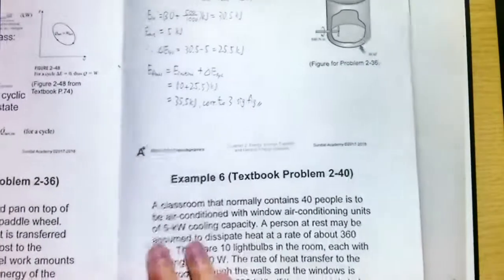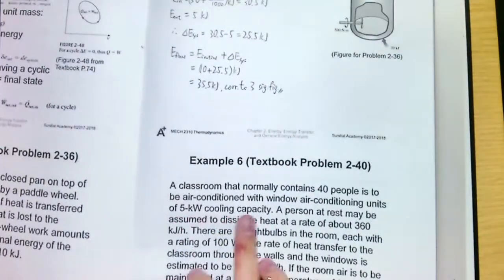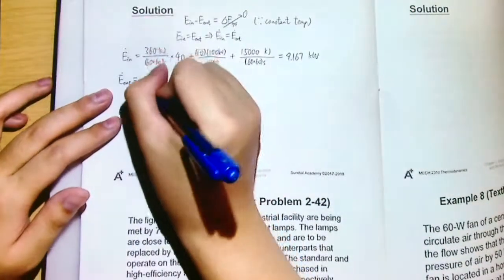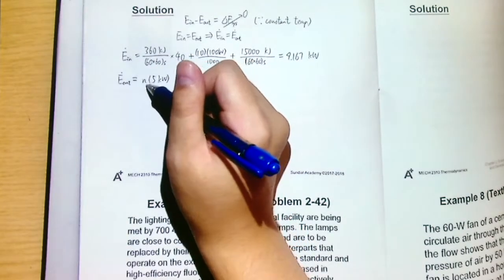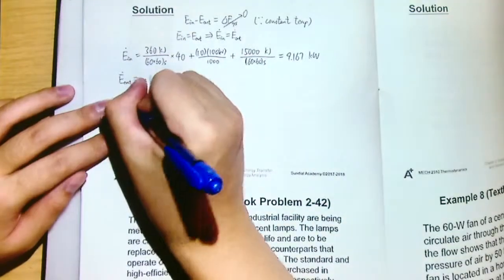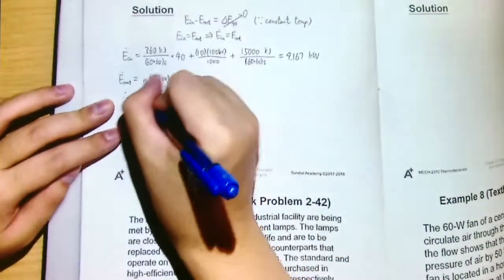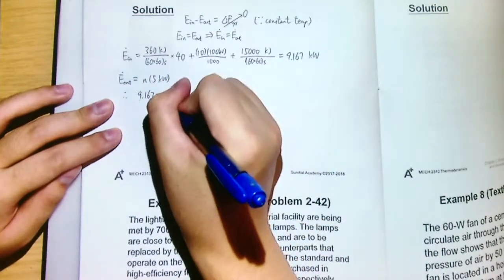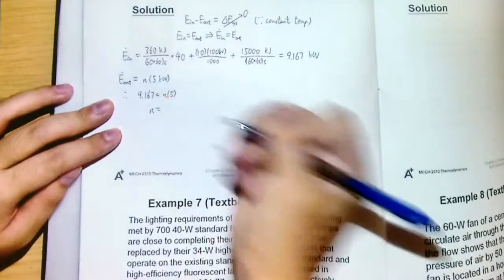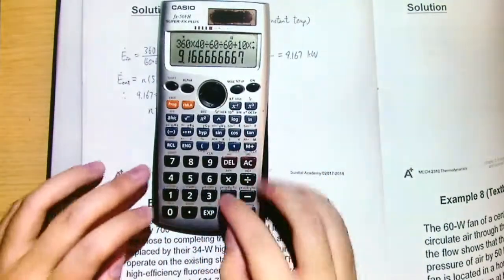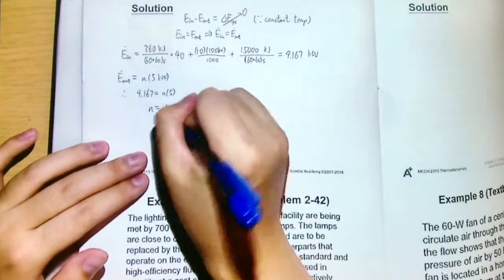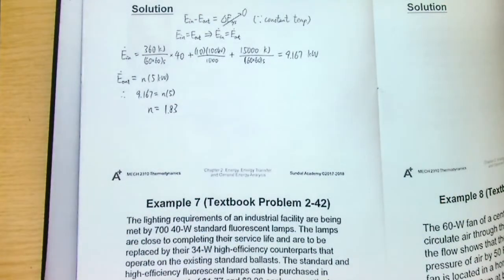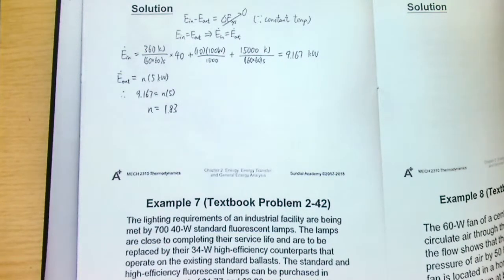What is E_out? Because we know that each of this air conditioner has a 5 kilowatt cooling capacity, the E_out should be n times 5 kilowatt, where n is the number of air conditioning units that we need to install. If we put all the values here, 9.167 equals n times 5, so we get n equal to 9.167 divided by 5, and we get 1.83. But as you know, for air conditioning units it should be an integer.